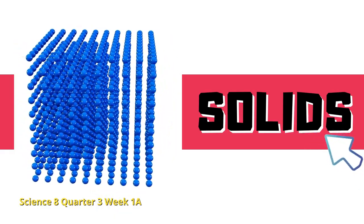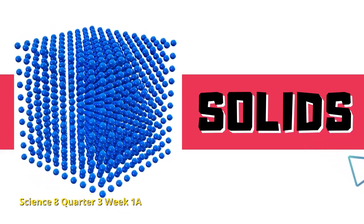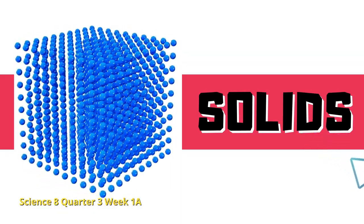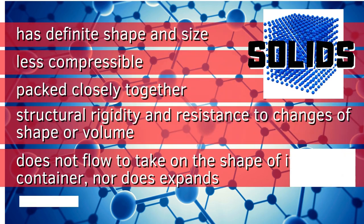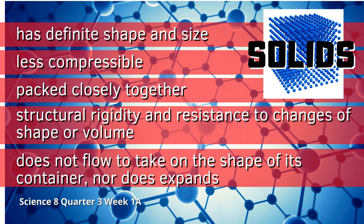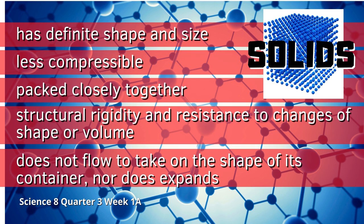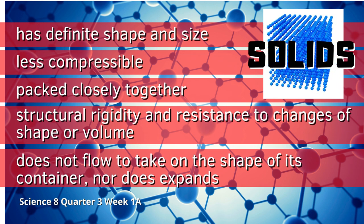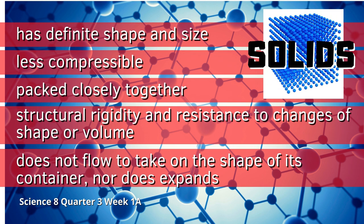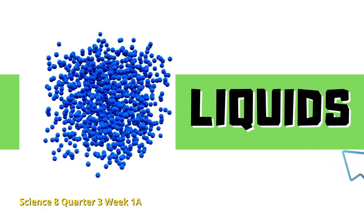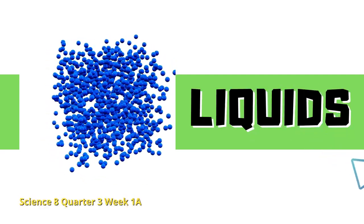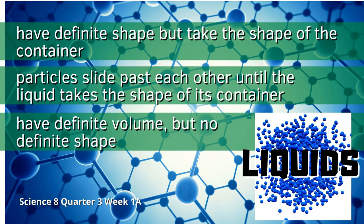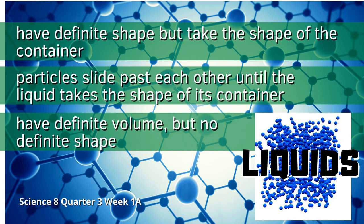Solids have a definite shape and volume. Solids are characterized by structural rigidity and resistance to changes of shape. Unlike a liquid, a solid object does not flow to take on the shape of its container, nor does it expand to fill the entire volume available to it like a gas. Most metals exist as solids at room temperature. Liquids have definite volume but no definite shape — they usually take the shape of their container. Liquids flow because particles are free to move but still attracted to each other.